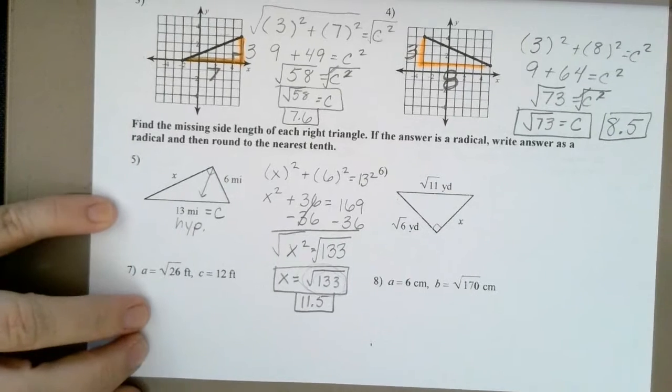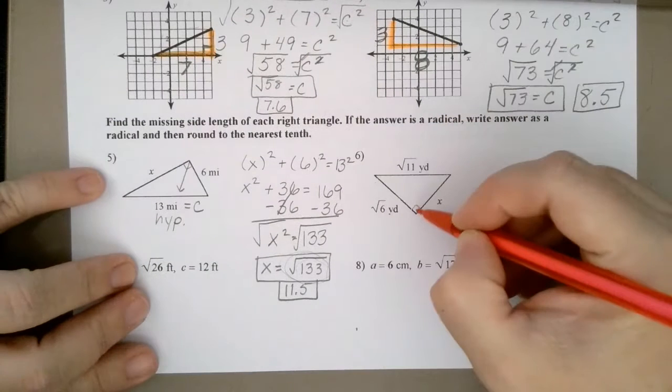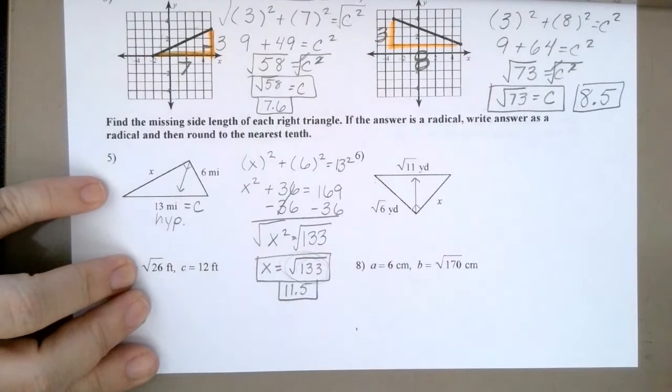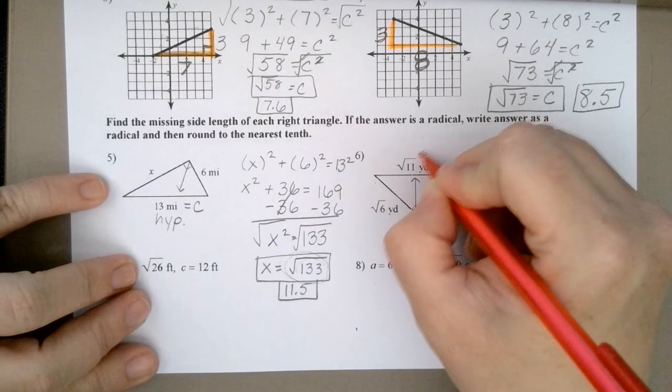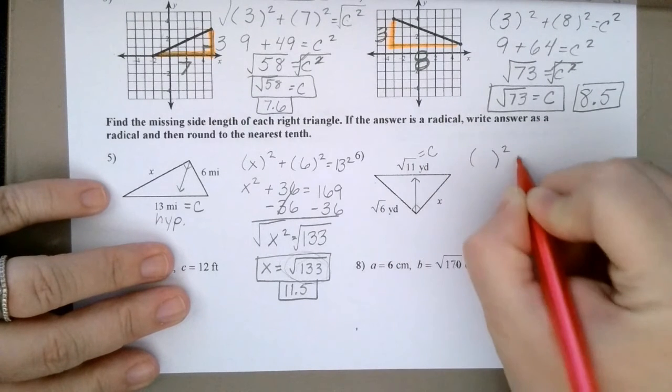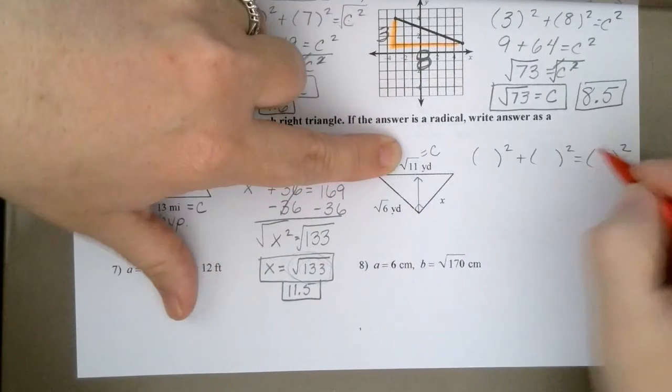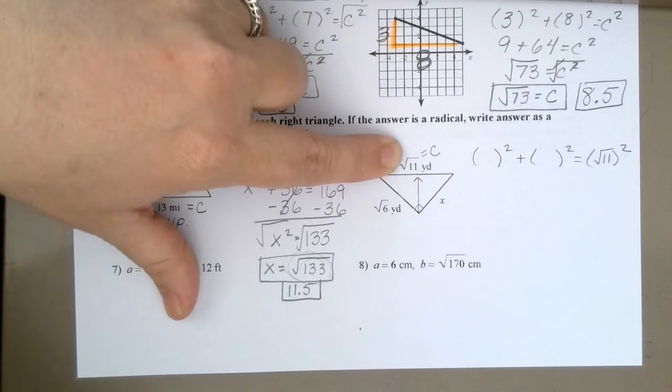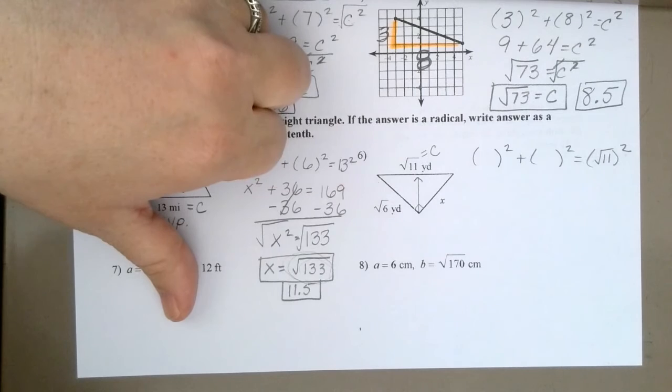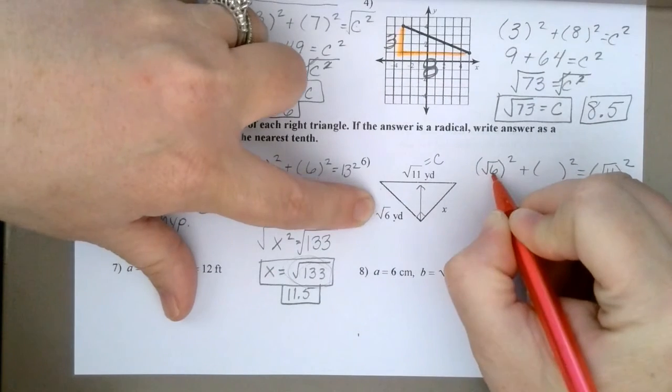Number 6. Why is number 6 a little different? There's radicals already in it. Shouldn't be a big deal that they flipped it upside down because I should still be able to take my right angle and see that that's going to be my hypotenuse. Which means that has to be C. So when I do A squared plus B squared equals C squared, rad 11 has to be in the C place. What are my A and my B? One is rad 6 and the other one is X.